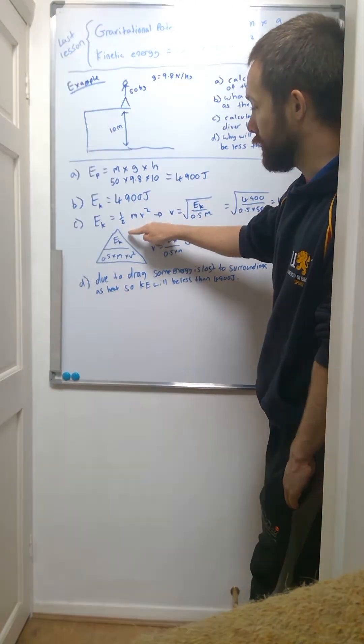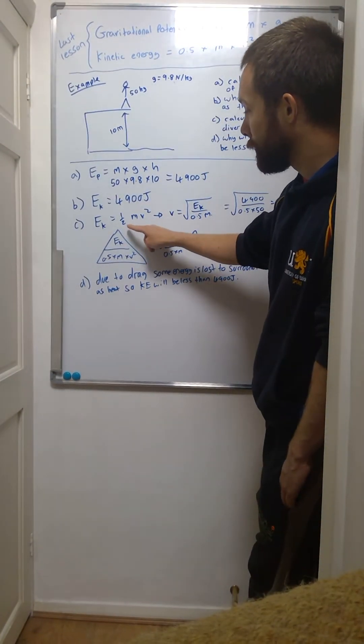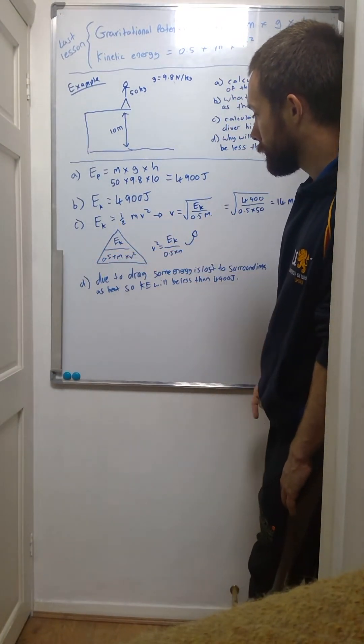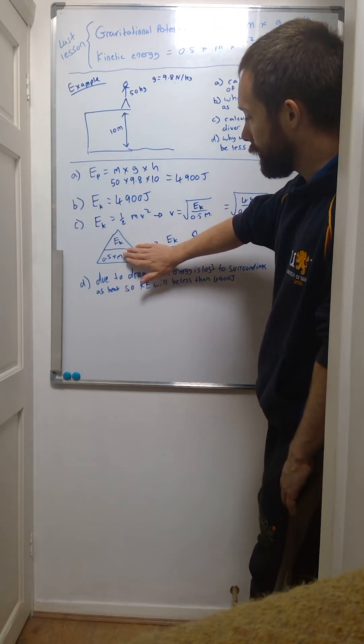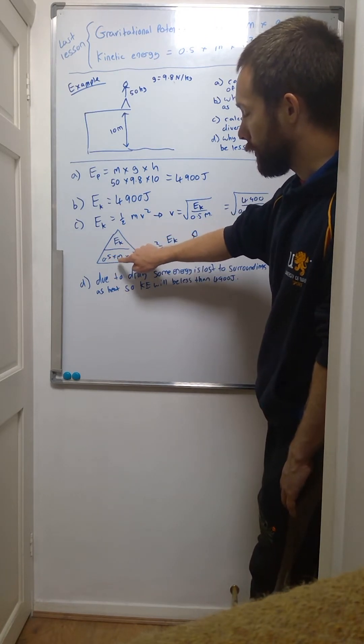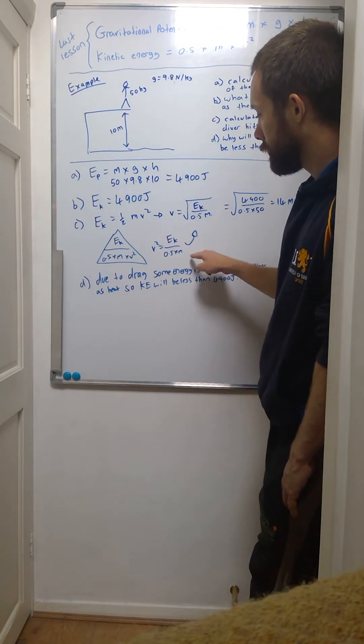I did it in one step, but I'll show you how we do that. I put it into a triangle, I called up v squared, and so v squared equals kinetic energy over half times the mass, and then I square root both sides and you get this equation here.